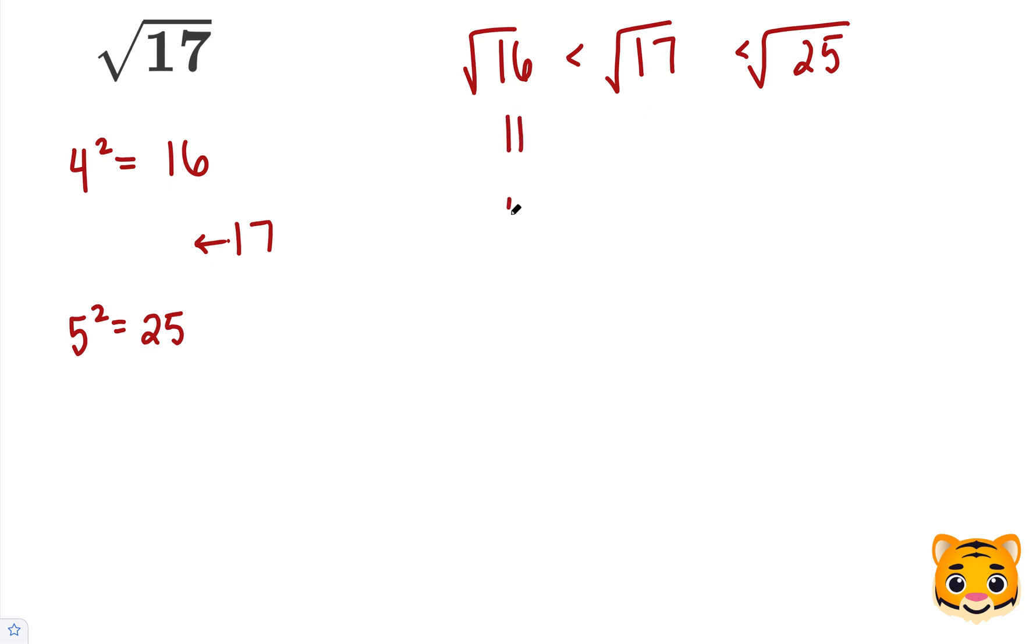The square root of 16 is equal to 4, because 4 squared is equal to 16. The square root of 25 is equal to 5, because 5 squared is equal to 25.